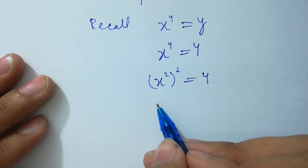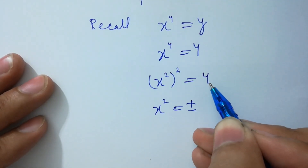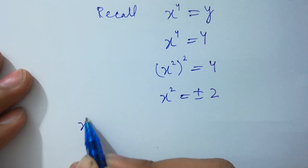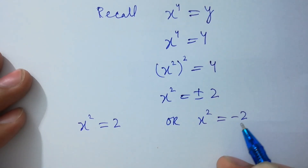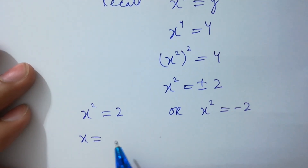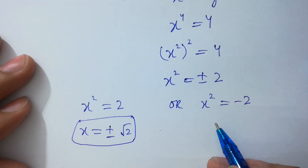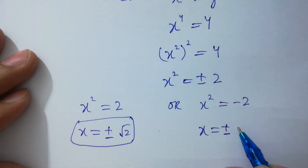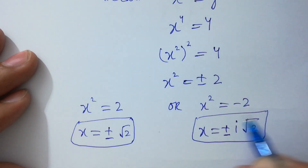Take square root on both sides: x squared equals plus or minus square root of 4 equals 2. Either x squared equals 2 or x squared equals minus 2. Taking square root on both sides: x equals plus or minus square root of 2, and for the negative branch, x equals plus or minus square root of minus 1 times square root of 2, which is plus or minus i times square root of 2.